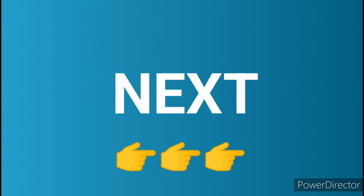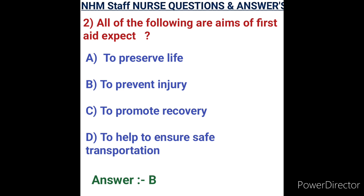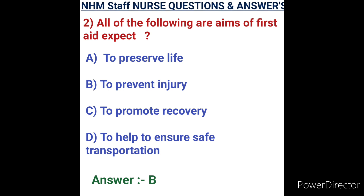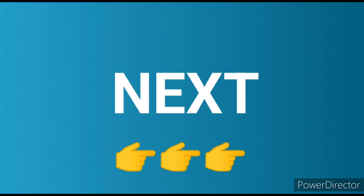Question number two: all of the following are aims of first aid except. Options: A) to preserve life, B) to prevent injury, C) to promote recovery, D) to help ensure safe transportation. The aims of first aid are to ensure open airway, adequate ventilation, maintain circulation until help comes, and treat until advanced life support can be administered. 'Prevent injury' is not listed in the aims. Option B is the correct answer.